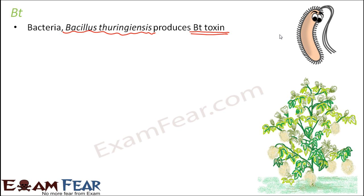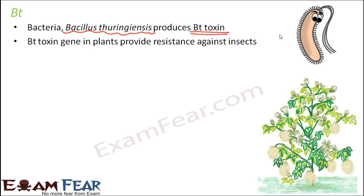This Bt toxin has the capacity to kill insects, so it acts as an insecticide. The question is how this Bt toxin, which is produced by a bacteria, will be incorporated inside a plant so that the plant can become resistant to insects. The Bt toxin gene in plants provides resistance against insects.